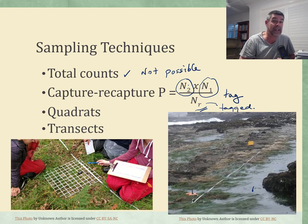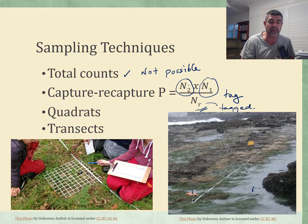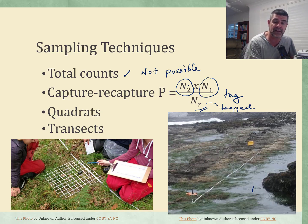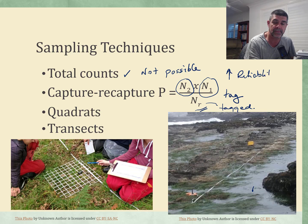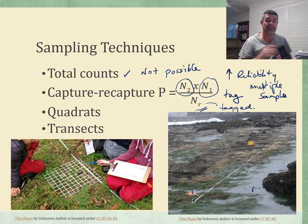The way we count can affect the numbers we get, and these are numbers we plug into formulas, so we need to understand exactly where they've come from and why this technique works. To increase reliability, we want multiple samples — we don't want to collect from just one place. We want to collect from a few places, average them out, and see what's going on.